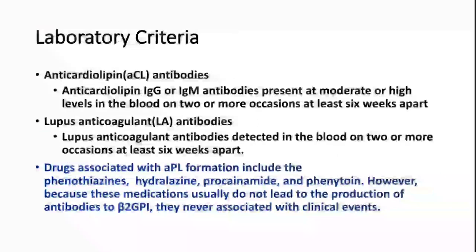Laboratory criteria include anti-cardiolipin IgG or IgM antibodies present at moderate or high levels on two or more occasions at least six weeks apart. Lupus anticoagulant antibodies must also be detected in the blood on two or more occasions at least six weeks apart.